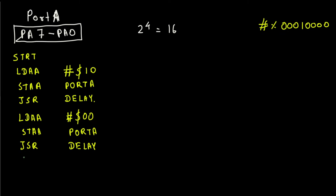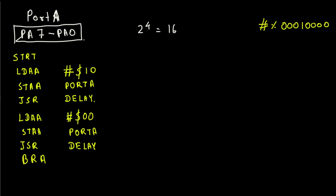After that, BRA — branch always — back to start, so the code keeps repeating.